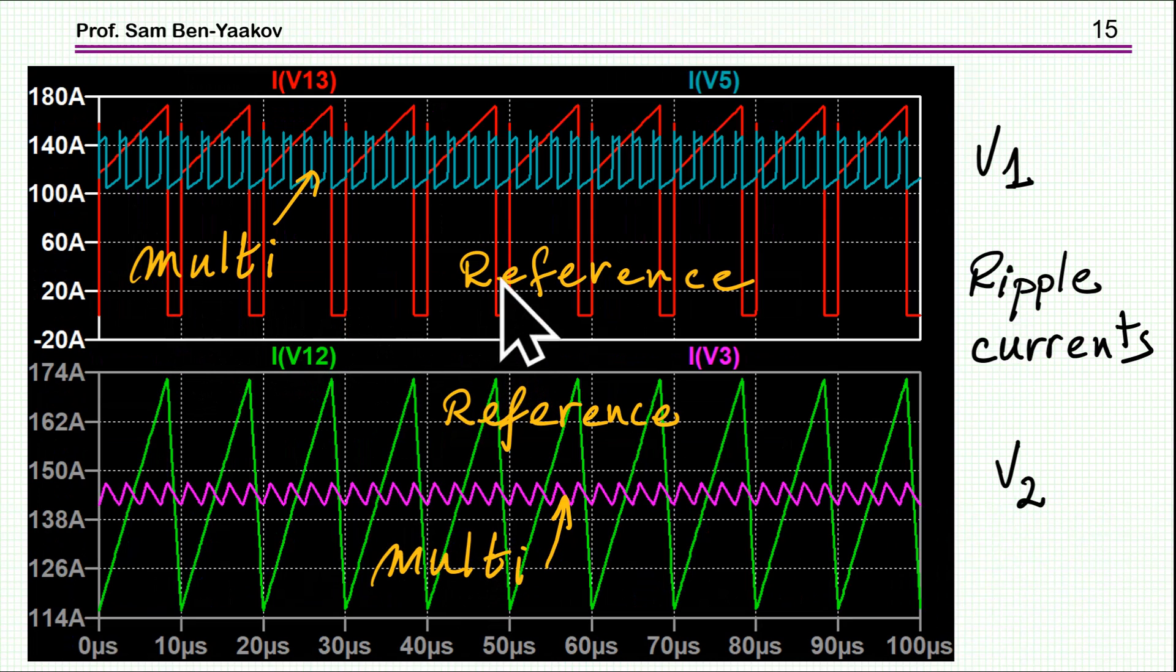We see here the ripple. The red here is the ripple for one phase or like one inductor, and here is for the four. Of course there is quite a bit of a ripple reduction here. And then we have also here a case of the other side.